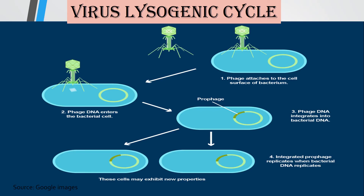Next comes the virus lysogenic life cycle. This is the second type in which the bacteriophage genome does not kill the host cell. Instead, it integrates its genome with the host cell. The first step is attachment, same as before. The second step is penetration, where the bacteriophage DNA enters inside the host cell. After that it integrates with the host genome. The viral genome and the host genome combine to form a structure which is known as prophage.